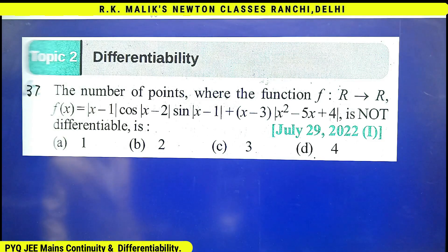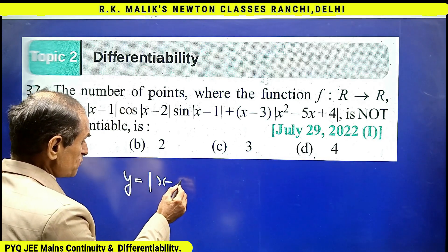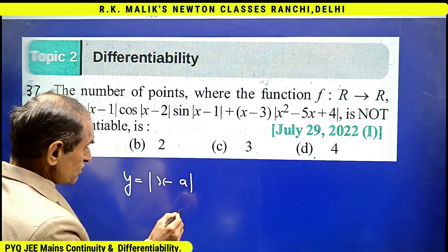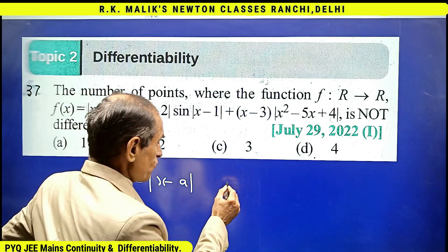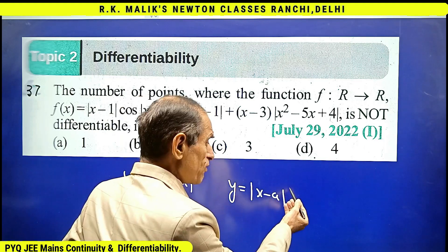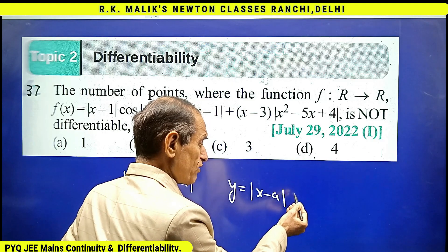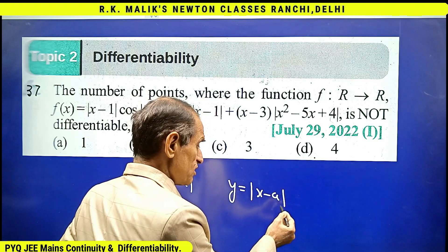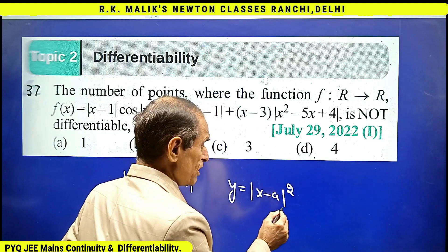The first key point to remember is that y = |x - a| is non-differentiable at x = a. However, if we have |x - a| raised to any power greater than one — say two, three, four, or five — then the function becomes differentiable at x = a.